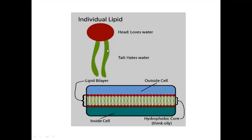Here you can see an individual lipid and the bilayer of the lipid. Observing the structure, you can see a red colored spherical head structure and two green colored tail-like structures. The head structure is hydrophilic — water-loving. The green tail-like structures are hydrophobic in nature — they don't like water. So a lipid has two parts: one hydrophilic and the other hydrophobic.